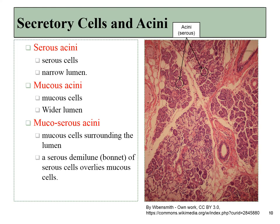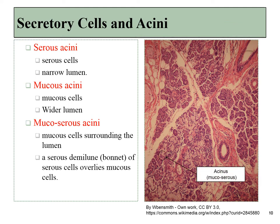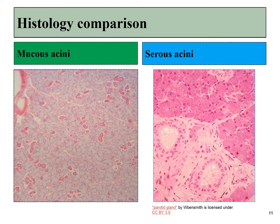In this picture, the serous acini stain pretty darkly, and the more mucousy ones appear a little bit lighter. The mucocerous ones look like a lighter region with a little hat or bonnet of the darker staining cells. The stain that makes these cells dark is staining for proteins — if you've got a bunch of fluffy mucousy stuff inside of you, you don't stain quite as darkly. There's our mucocerous acini right there, which is half the lighter pink and half the darker pinkish-purplish color. Let's zoom in to compare what mucous acini look like under the microscope versus what the serous acini look like.